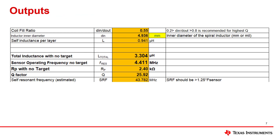The outputs of this tab start with the coil fill ratio and inner diameter. The fill ratio is the inner diameter over the outer diameter. To achieve a high Q factor it's best to keep this between 0.2 and 0.8. The inner diameter is calculated and shown in either millimeters or mils. My design yielded a 0.55 coil fill ratio, which is well within the recommended range. If it were too high or low, changing the turns per layer, trace width, or spacing would directly impact it.